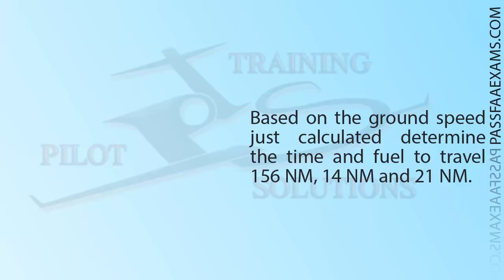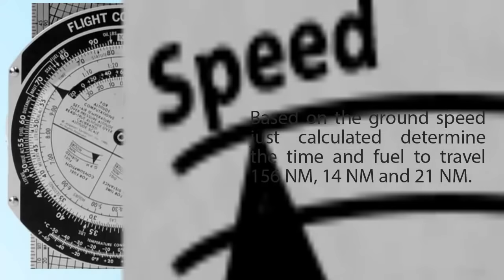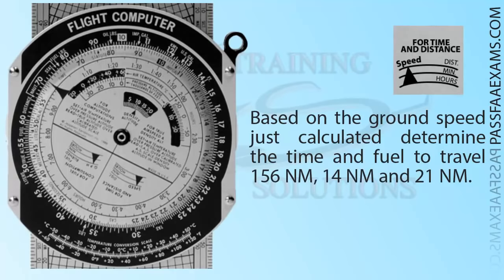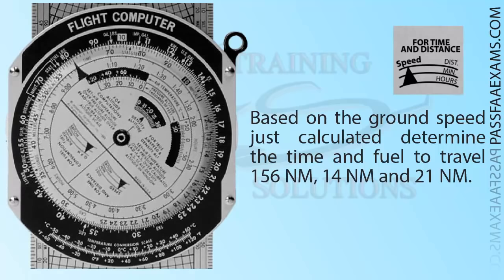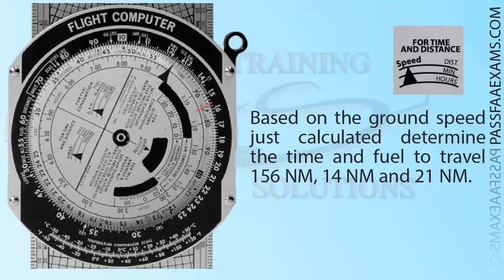For the rest of the calculations, we will want to turn the E6B to its other side, and as usual, all we need to do is follow the legends on it. For the time calculations, we need to set the big triangle marker over the ground speed, then look for the distance on the outer ring, and find the time on the inner rings. So if we set the speed on 126 knots and then look for a distance of 156 nautical miles, we can see on the middle circle a time of 74 minutes, or the inner circle a time of 1 hour and 14 minutes, which is exactly 74 minutes.